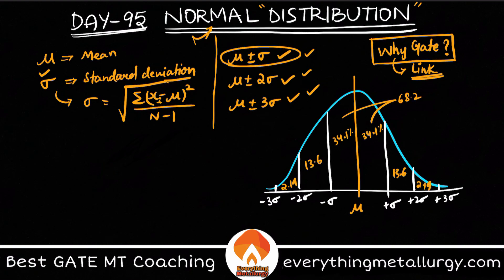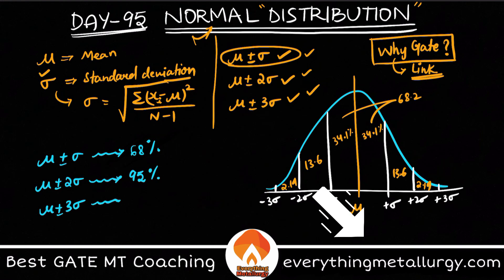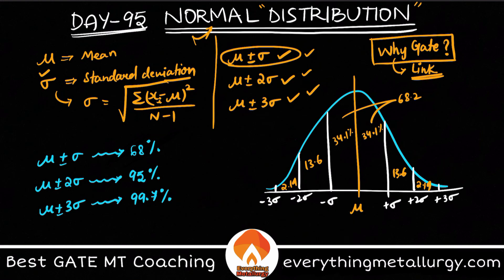To summarize: if you are dealing with mu ± sigma, about 68% of the data falls in that interval. If you increase the tolerance to 2 sigma, you get 95%. And if you go to 3 sigma, you reach about 99.7%. I'm ignoring small rounding adjustments here.